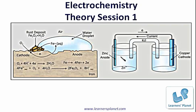Electrochemistry is the branch of chemistry which correlates the electrical energy and chemical reactions which are redox reactions in nature. Redox reactions involve reduction and oxidation reactions taking place together. For example, this is rust — rust is formed through a redox reaction.